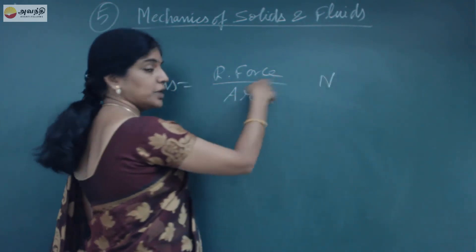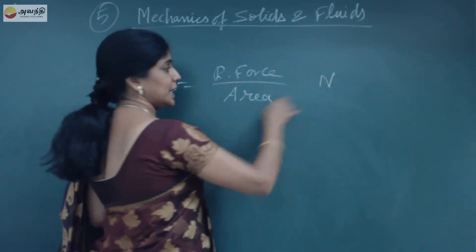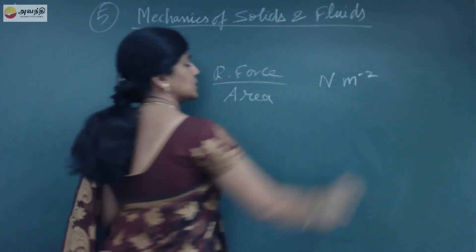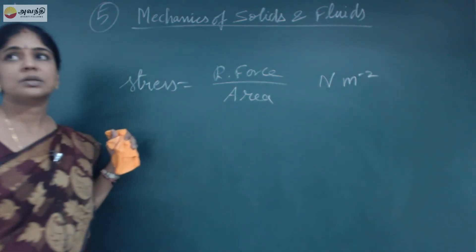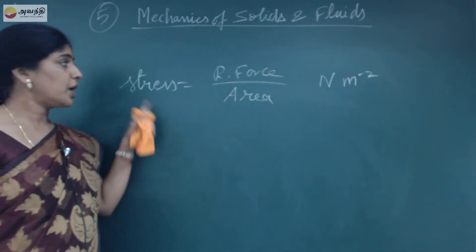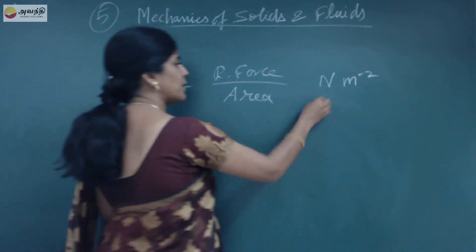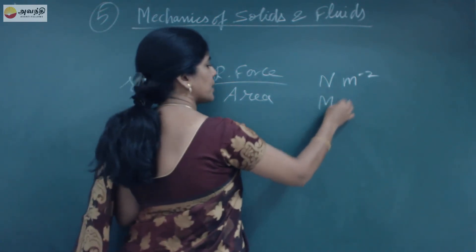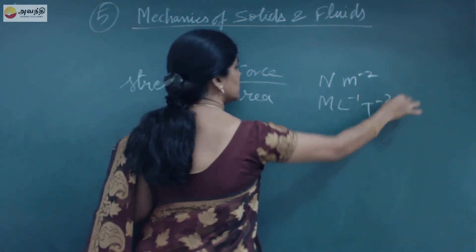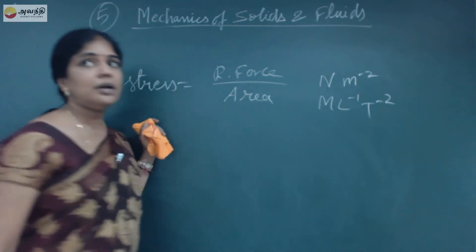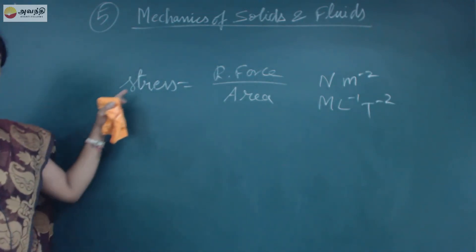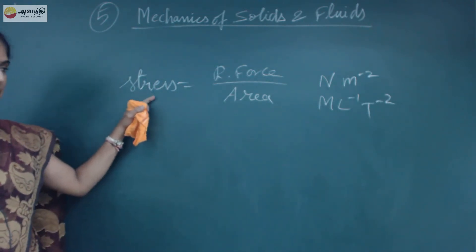The unit of force is Newton and the area is meter square, so Newton per meter square will be the unit for stress. What will be the dimensional formula? It is ML⁻¹T⁻².